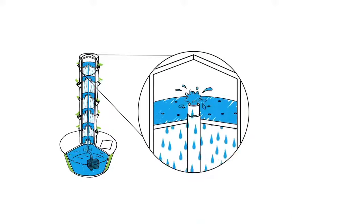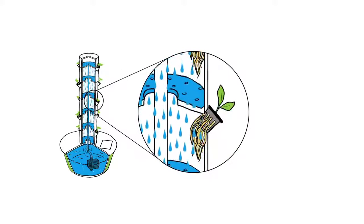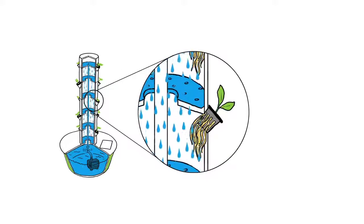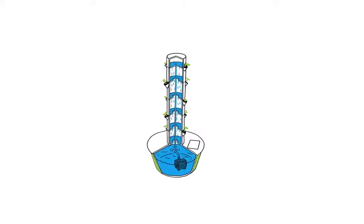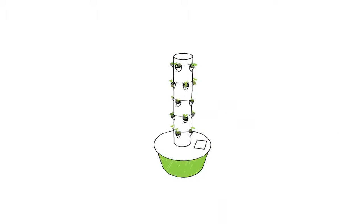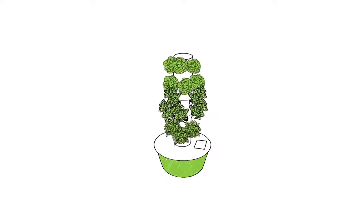This process is continuous, providing fresh oxygen, water, and nutrients to the roots of the plants. This patented aeroponic process enables food crops to grow faster than they would in soil, so they can be harvested more often.